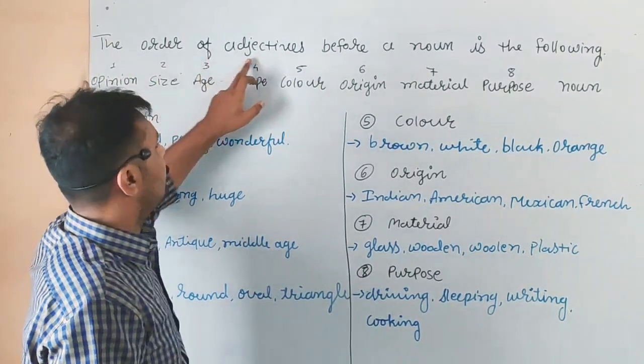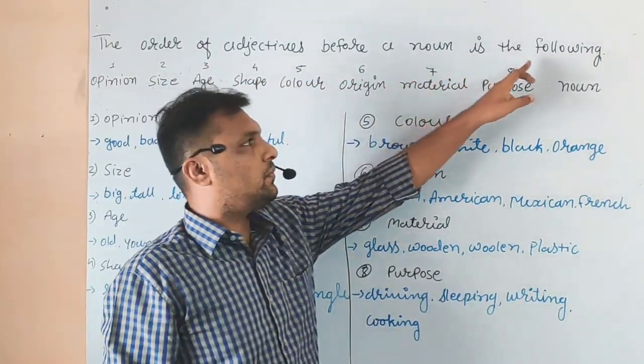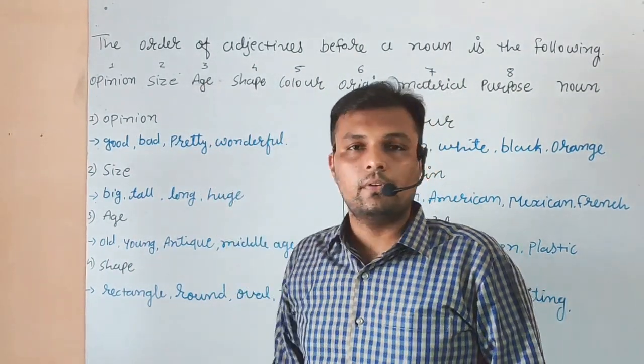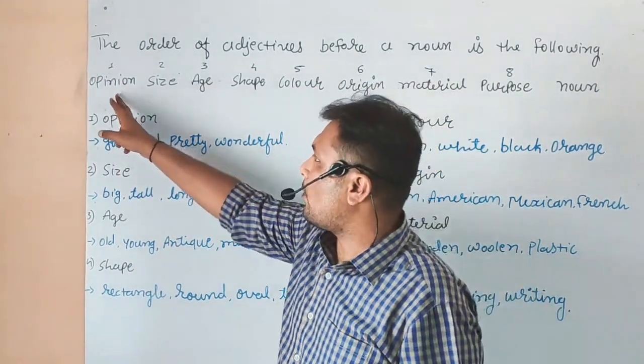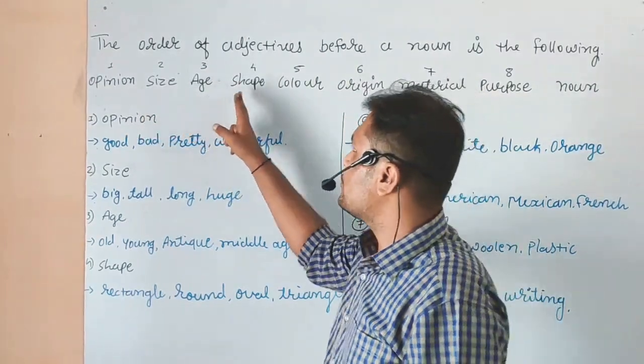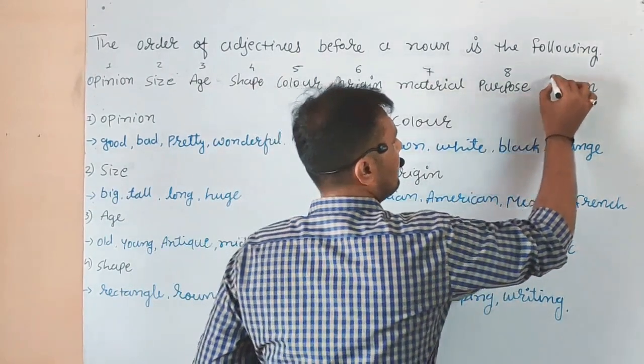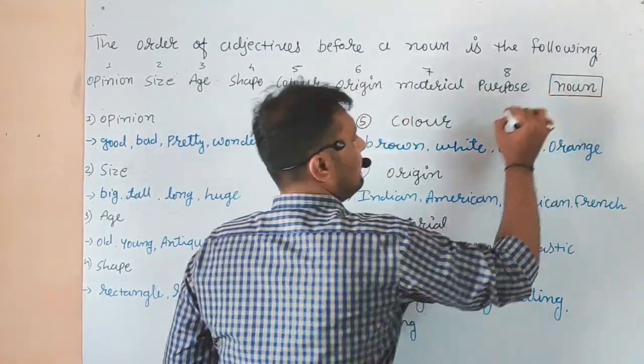The order of adjectives before a noun is the following: Opinion, Size, Age, Shape, Color, Origin, Material, Purpose, and then we have Noun.